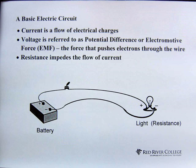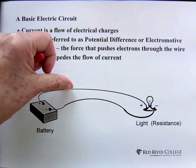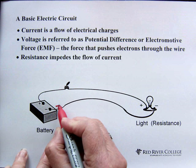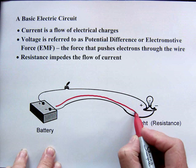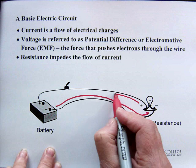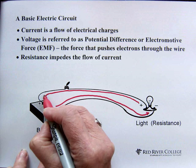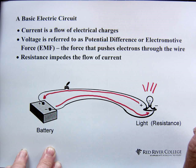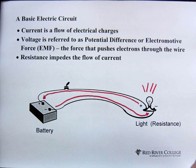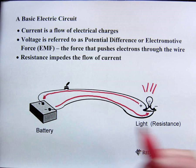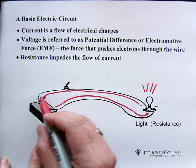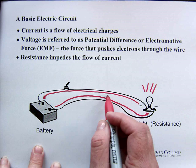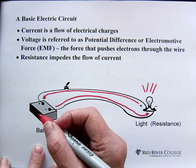If we have that complete connection — a closed switch — the current runs through the line all the way through the light and back on the other side, and that causes the light to turn on. Current is just a flow of electrical charges. All through this wire, and actually all through everything, we have atoms, and what happens is the electrons just move from atom to atom, and that's what causes the flow of electrical charges.